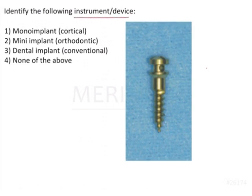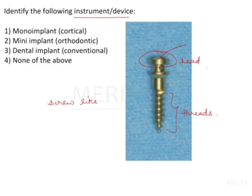Identify the following instrument or device. In the image we have something that looks like a screw-like structure. This has a head and these are the threads. Looking at it carefully, this head doesn't have any place for an abutment fixture — you cannot place anything else inside it. It's a single piece structure in which you cannot put a prosthesis.